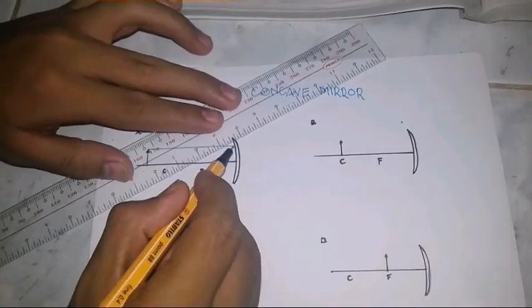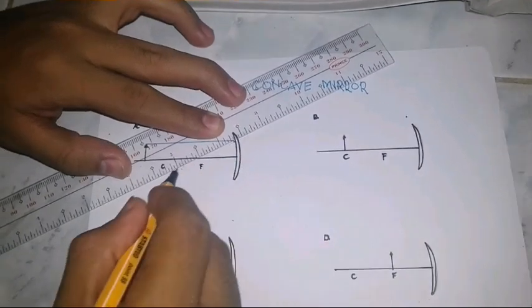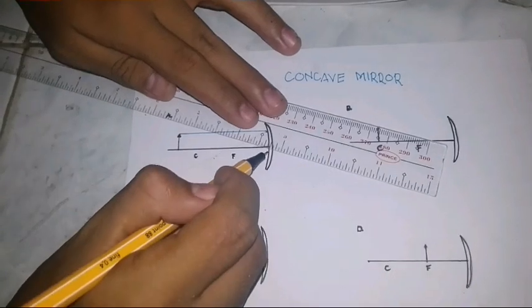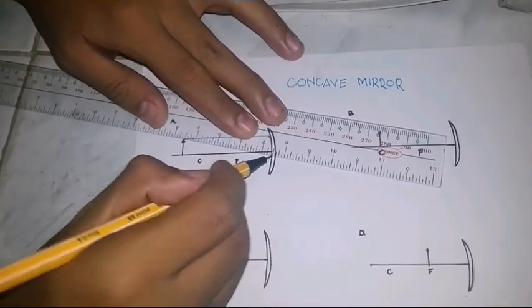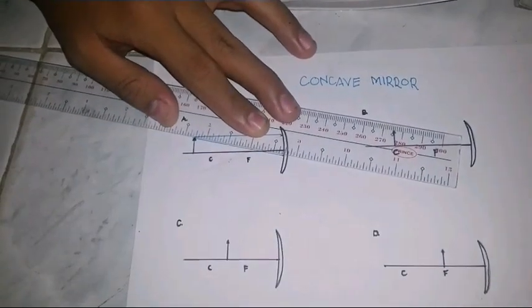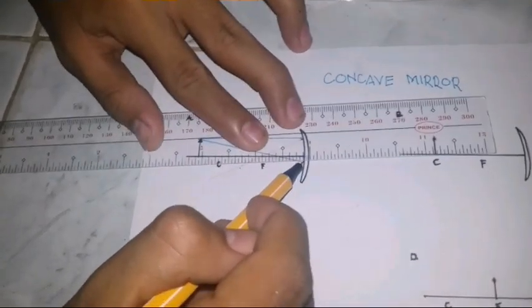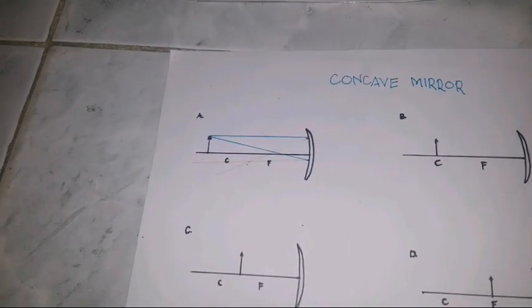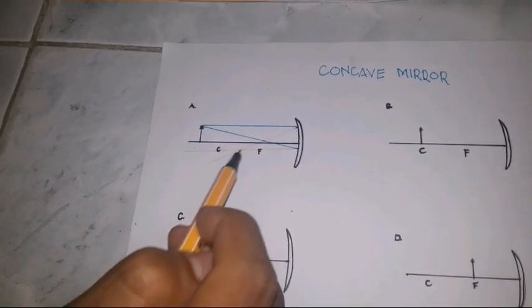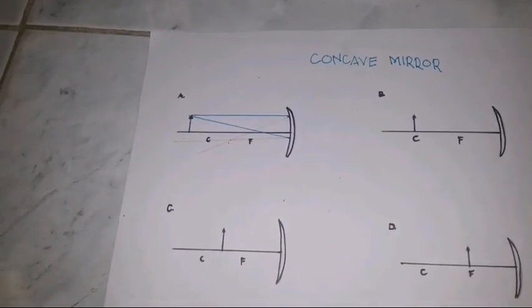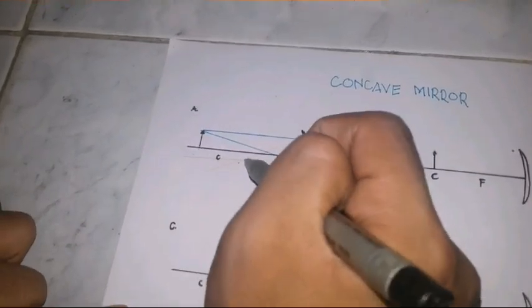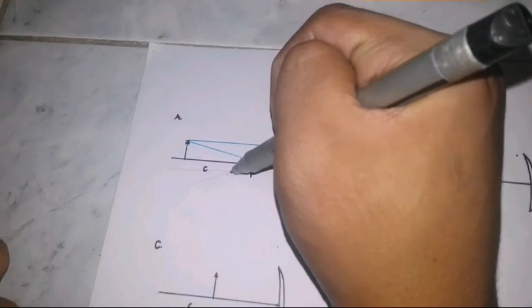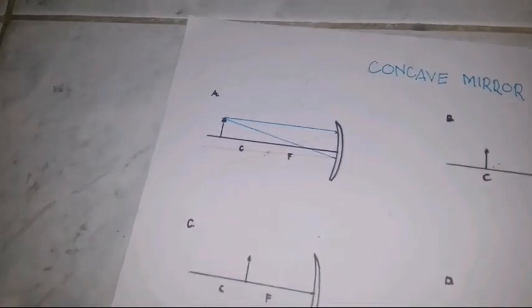The principal rays applied for diagram A are PF ray and FP ray. The blue line represents the ray of light and the red line represents the reflected light. Where the intersection of the reflected lights are is where the image is formed.